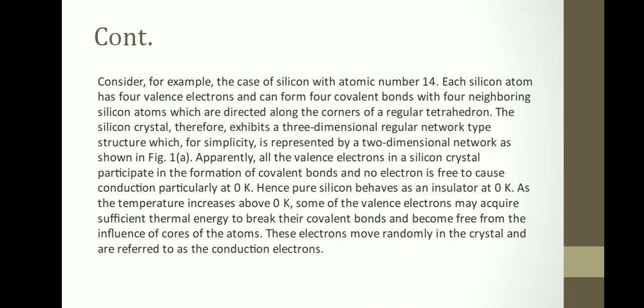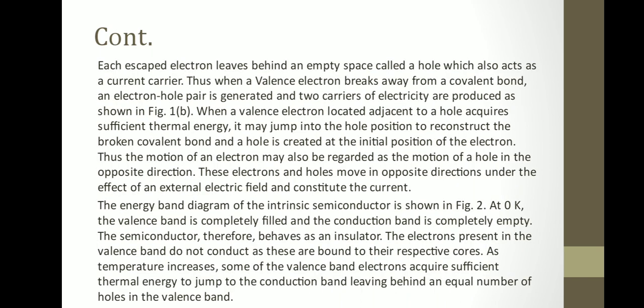Each escaped electron leaves behind an empty space called a hole, which also acts as a current carrier. Thus, when a valence electron breaks away from the covalent bond, an electron-hole pair is generated and two carriers of electricity are produced. When a valence electron adjacent to a hole acquires sufficient thermal energy, it may jump into the hole position to reconstruct the broken covalent bond, and a hole is created at the initial position of the electron. The nearest bond electron can then jump into the hole, creating a vacant site — this is how the conduction process starts.